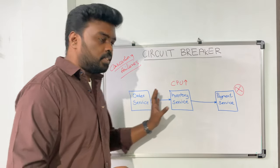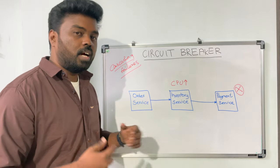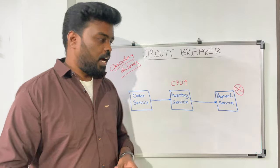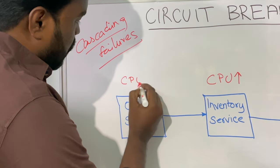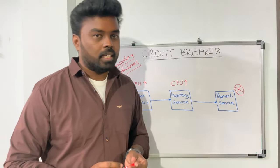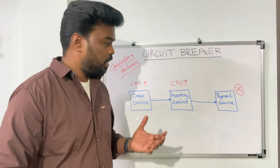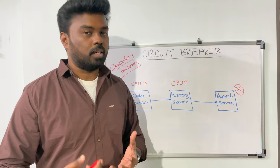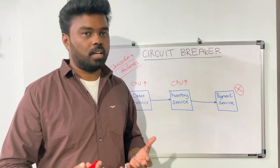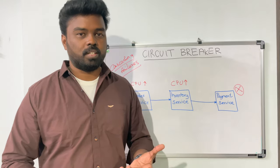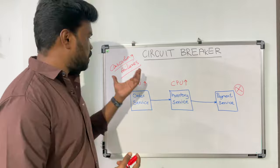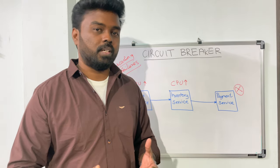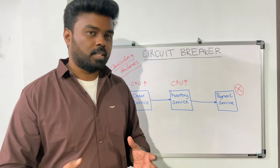The order service will also wait a long time for responses from the inventory service, start to time out, and its CPU usage will also go high. This doesn't stop with the order service — any other services that rely on the order service or the inventory service will face the same issue, because these services cannot respond to requests quickly. All those services will also start to wait long for responses, and their CPU usage will also go high. This is the cascading failure — the issue starts in one part of the system and slowly propagates to other parts, potentially bringing the whole system down.